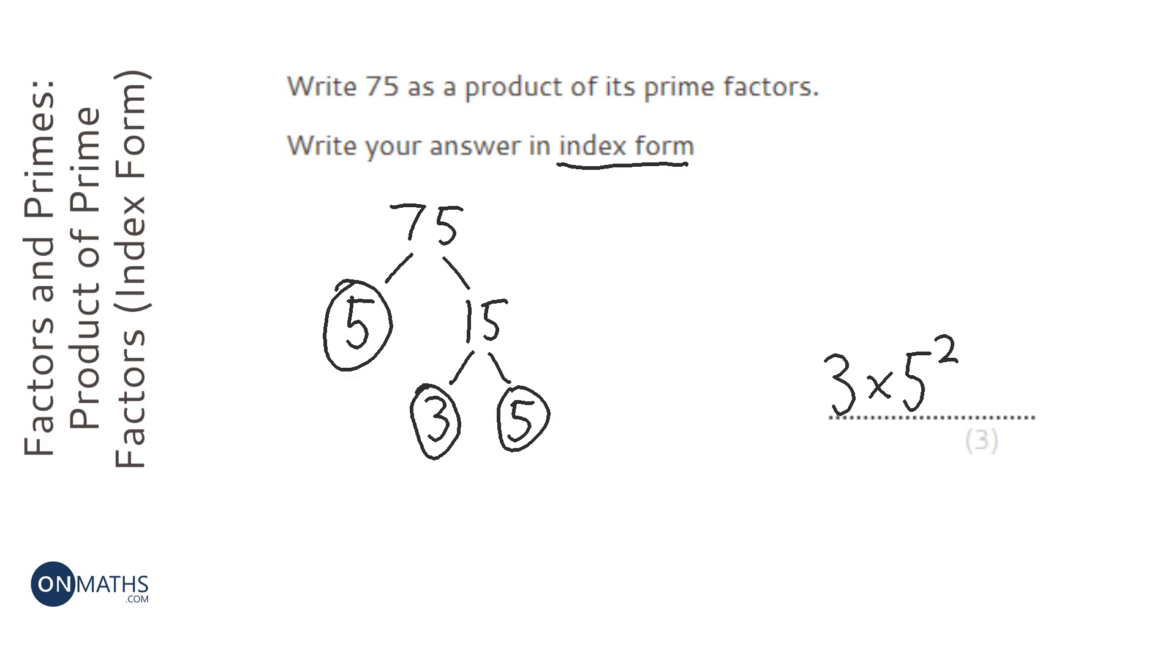Be careful to make sure you've got the times there. Don't actually calculate 3 times 5 squared, because the answer will just give you 75.